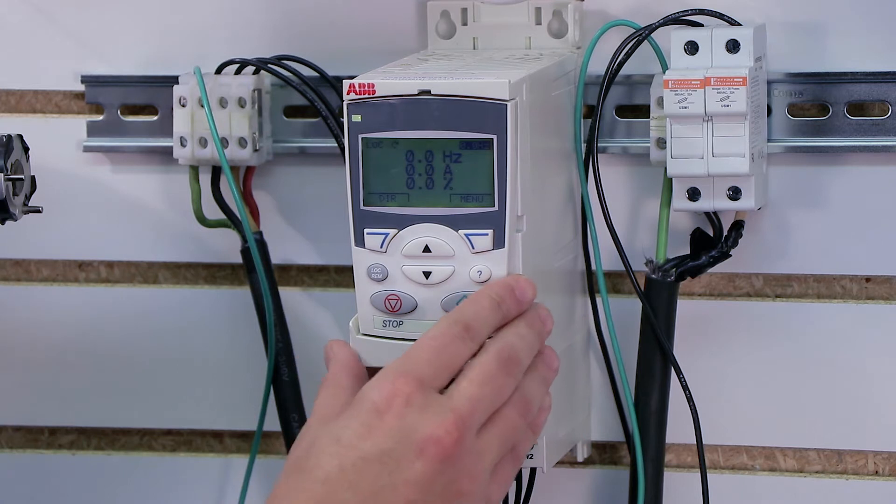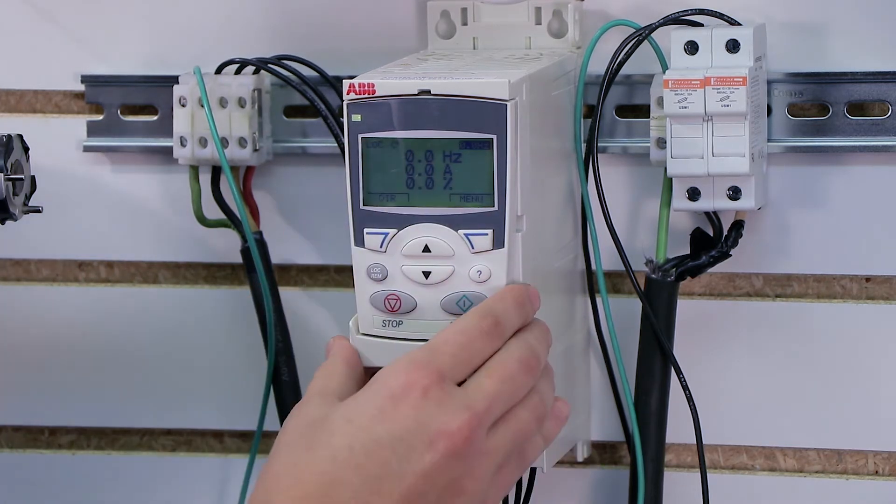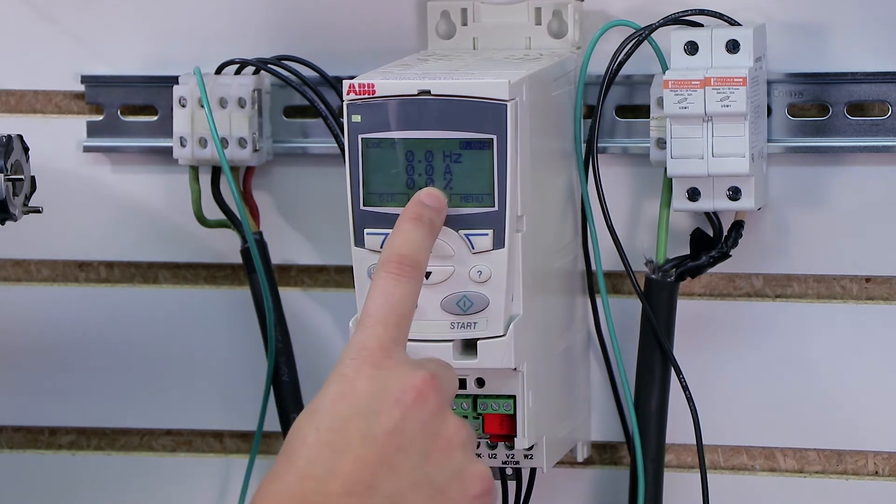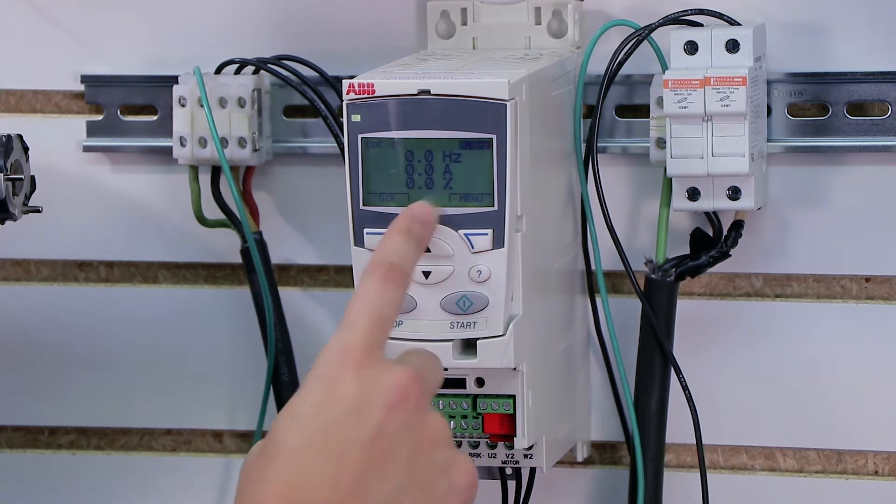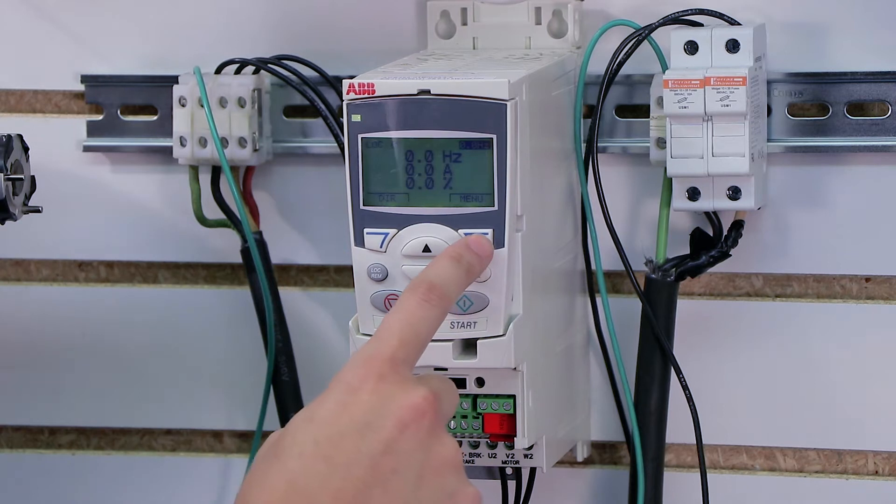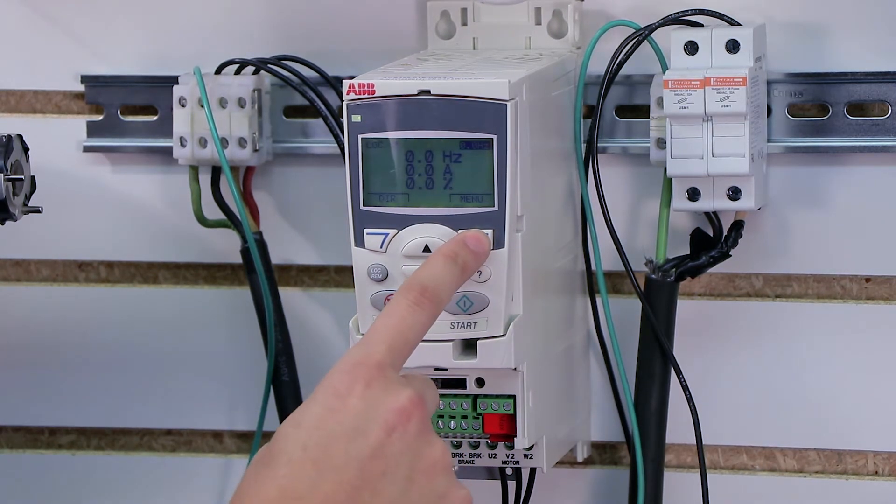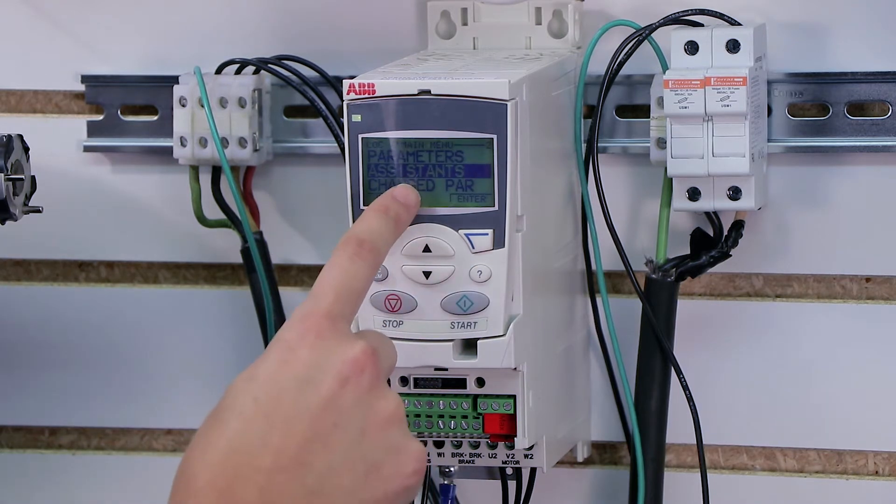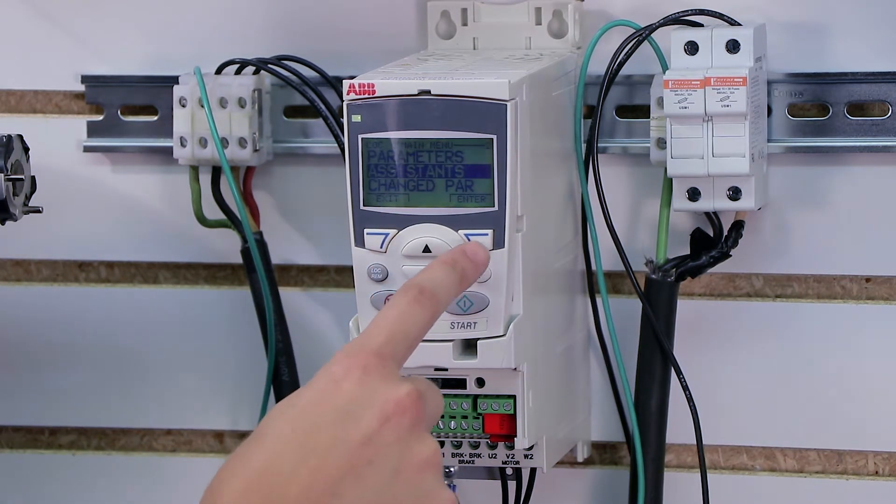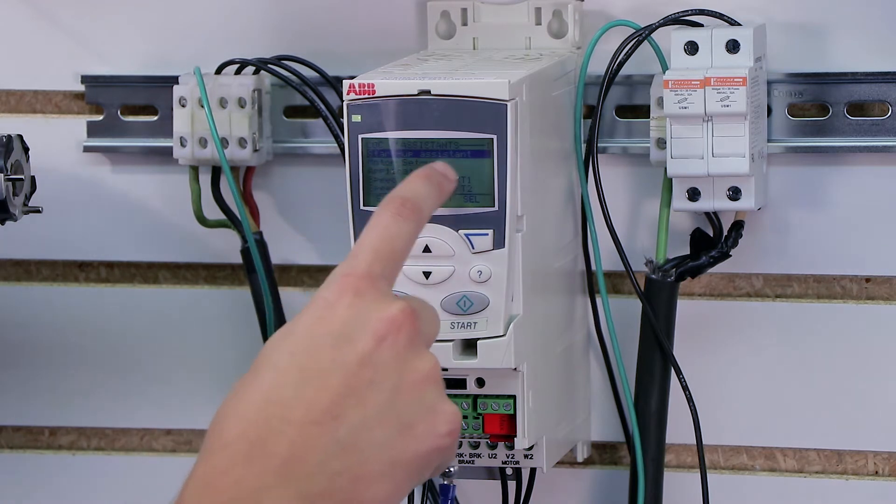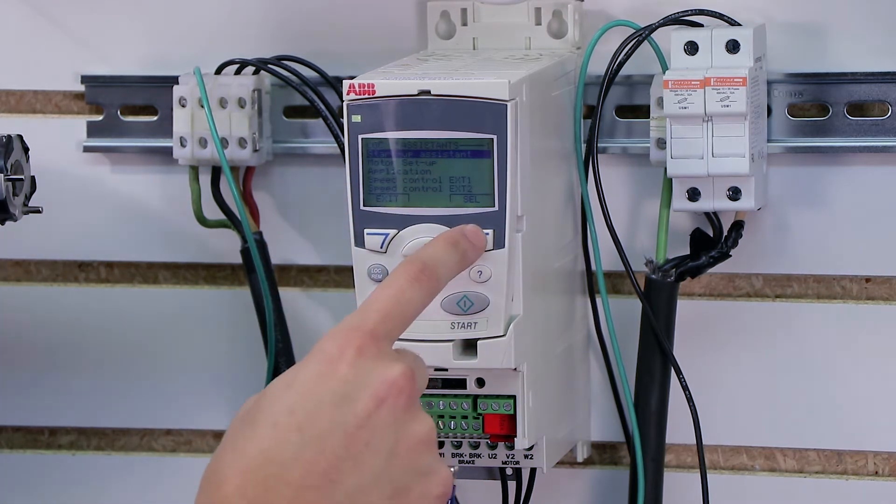So to get started, we're at our home screen essentially. Now if you just powered up the drive for the first time, it may pop up and ask you if you want to start the startup assistant automatically, but for me, since I am recommissioning this drive, I need to start it manually, and to do that, I press the menu button, and I go down to assistance, and I press enter.